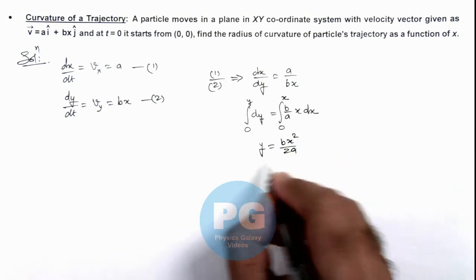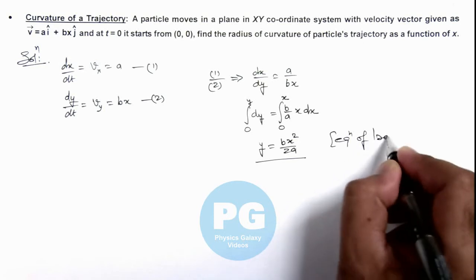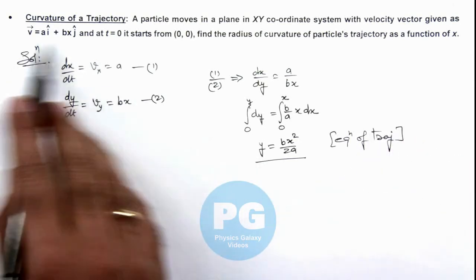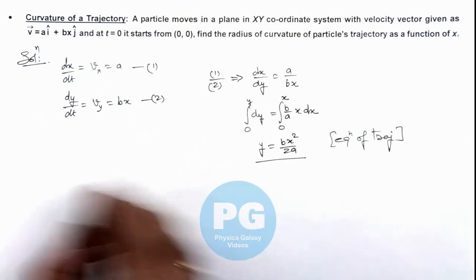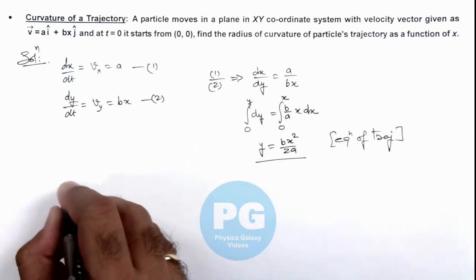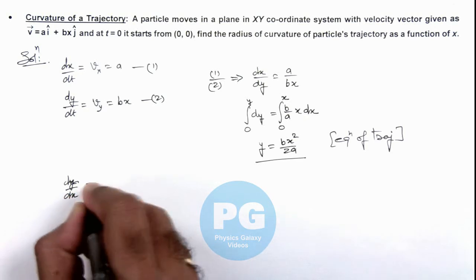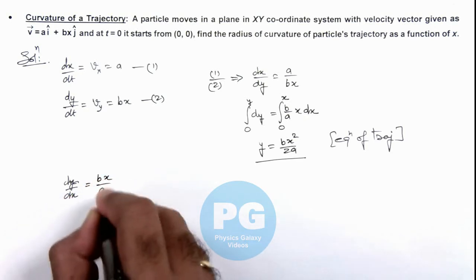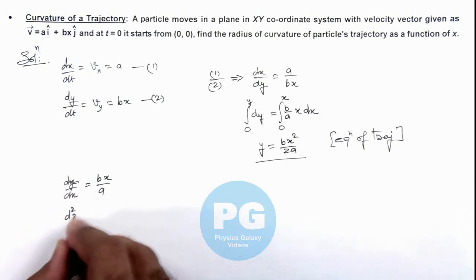This is the equation of trajectory of the particle if it is moving according to this velocity. From here we can calculate the slope of this curve, dy/dx, which equals bx/ay. Differentiating further gives d²y/dx².